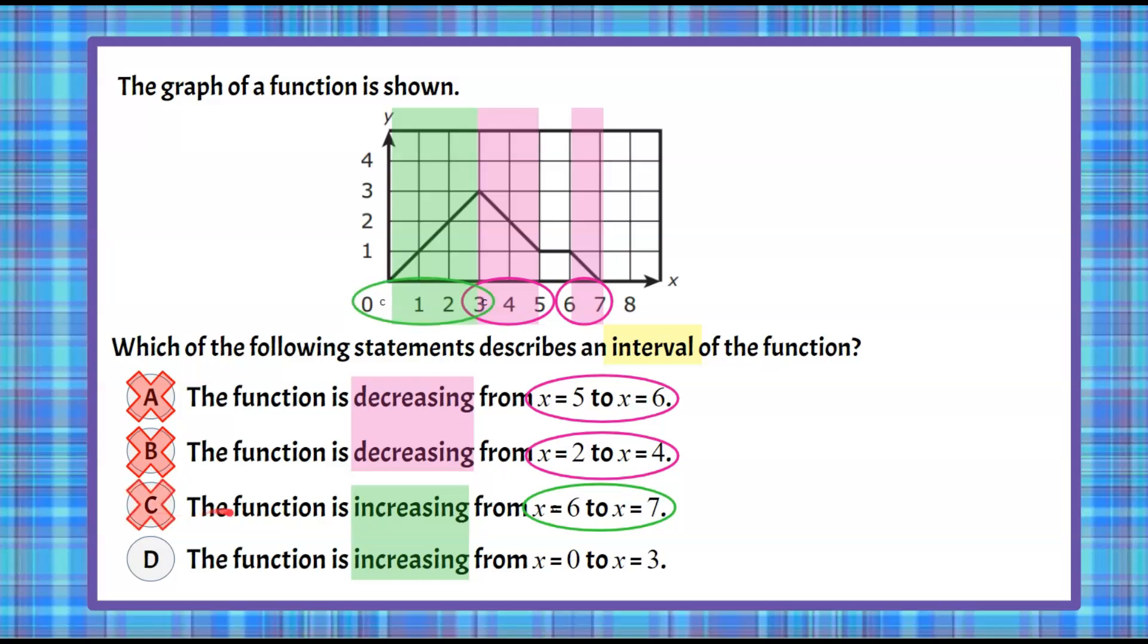I'm hoping D is our answer. We're looking for it to be increasing from 0 to 3, and when we look from 0 to 3, it is definitely increasing. Our answer choice that is correct here is answer choice D.